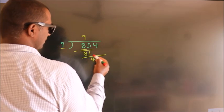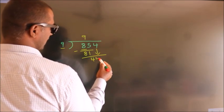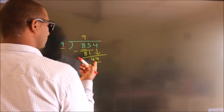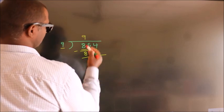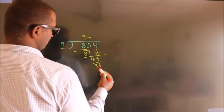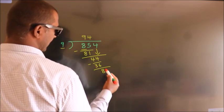After this, bring down the beside number, 4 down. So 44. A number close to 44 in the 9 table is 9 fours, 36. Now we subtract and get 8.